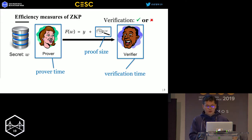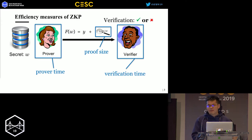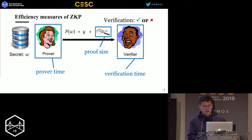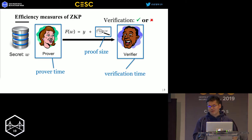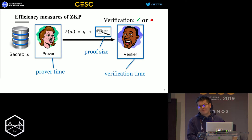There are three efficiency measures for zero-knowledge proof protocols. Prover time is the time for the prover to generate the proof. Proof size is the length of the proof. And verification time is the time for the verifier to check the proof. In general, we want fast prover time, fast verification time, and short proof — that's a perfect zero-knowledge proof.